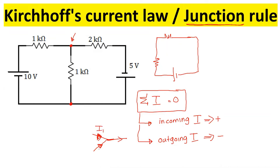Let's take an example: let's say I1 and I2 are coming towards the junction — so those are positive values — and I3 is going out of the junction, so I3 is a negative value. According to Kirchhoff's junction rule, I1 plus I2 minus I3 equals zero. If you are given a diagram with current directions marked like this, you can write this equation directly.